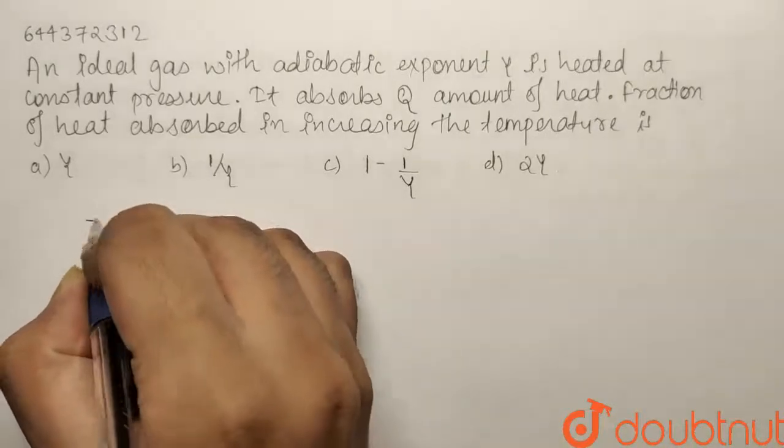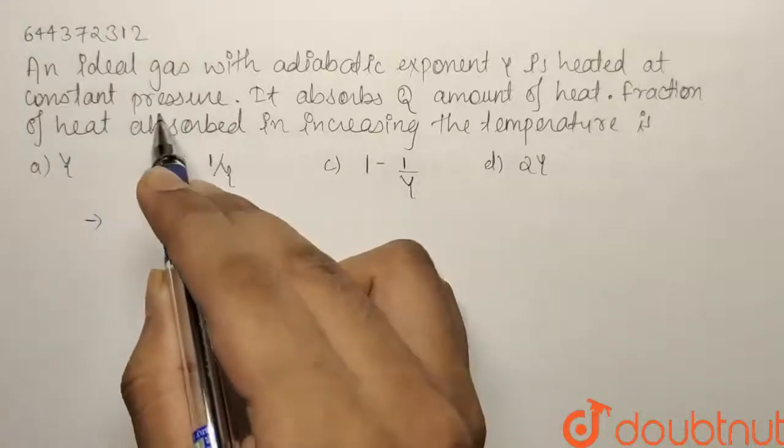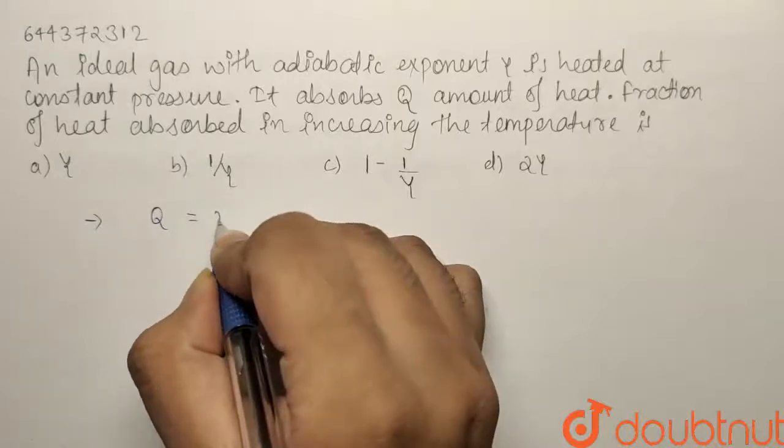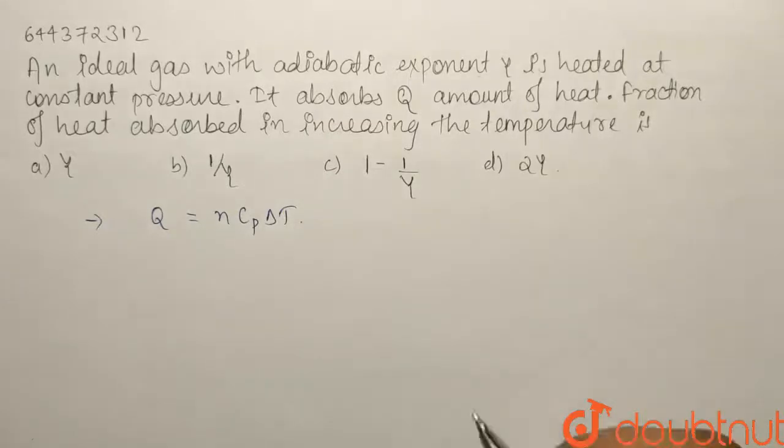So what we have been given is Q, and we know that it is a constant pressure process. So it will be nothing but nCpΔT. This will be the value of heat involved in the reaction.